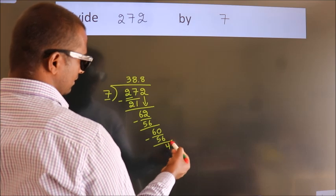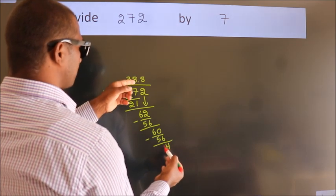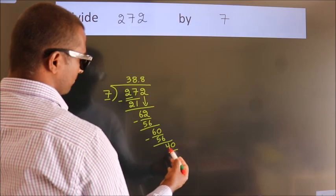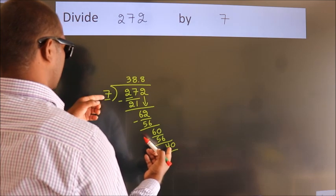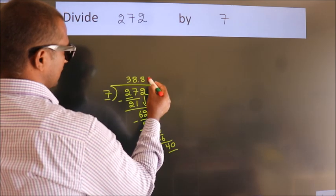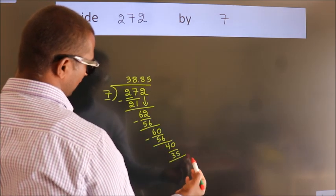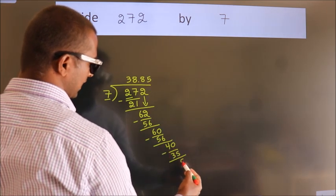After this, we already have the decimal. So directly take 0. So 40. A number close to 40 in 7 table is 7 fives, 35. Now we subtract. We get 5.